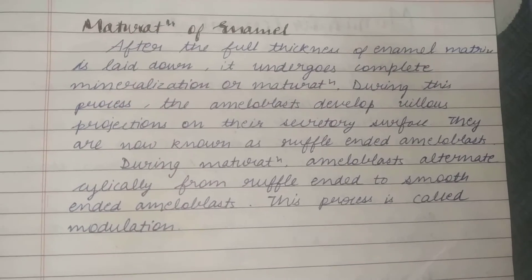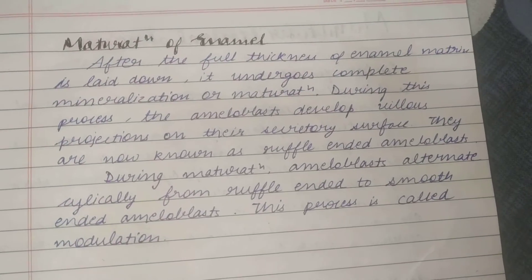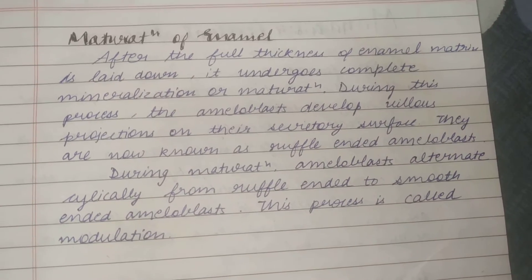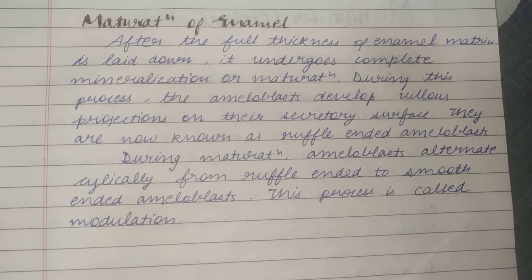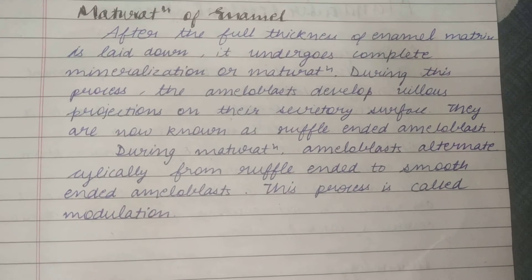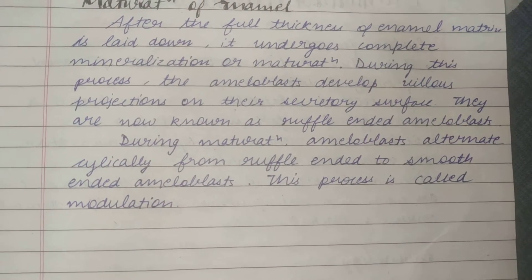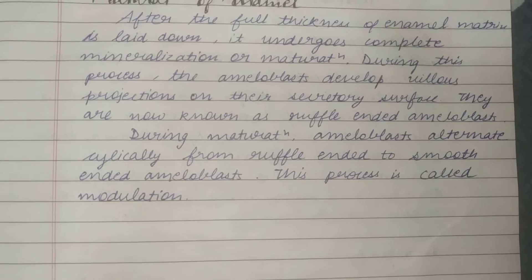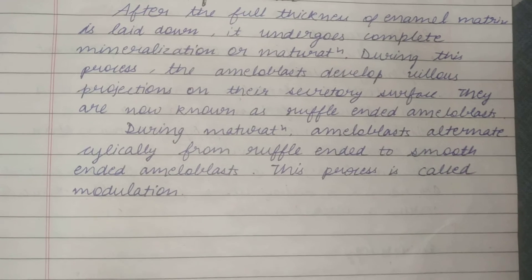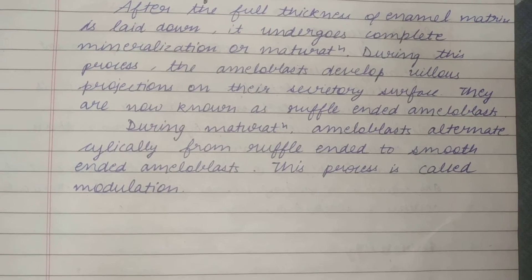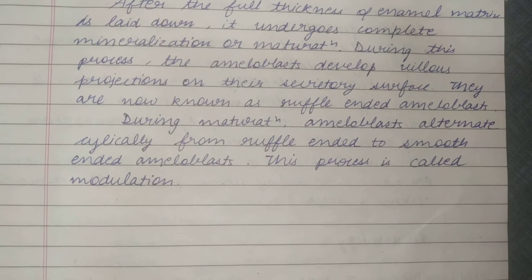What changes do we see during the maturation of enamel? After the full thickness of the enamel matrix is laid down, it enters complete mineralization or maturation. In this process, ameloblasts basically develop villous projections on their secretory surface — these are the ruffled-end ameloblasts. In the maturative stage of the ameloblast life cycle, ameloblasts undergo changes and go through a phase of modulation.